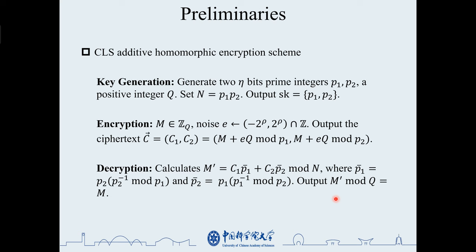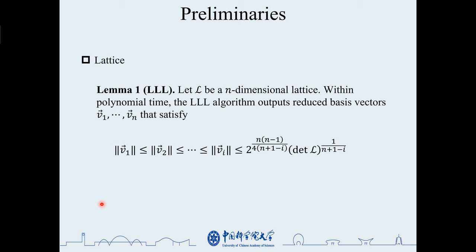Next, since the Coppersmith method is lattice-based, let us briefly introduce the lattice. Number one is the well-known LLL algorithm where the norm of the first i vectors satisfy the following inequality.